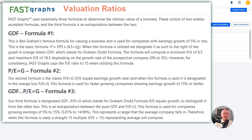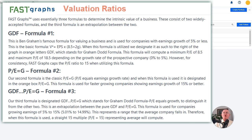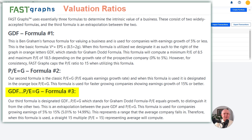We're going to start by talking about the formulas that we use. If a company's growth rate is 5% or less, FastGraphs will utilize what we call the Graham-Dodd formula, designated by GDF. For high-growth companies growing faster than 15% a year, we incorporate the formula Peter Lynch made famous: PE ratio equal to growth rate, or PEG. The third formula is an extrapolation between the two, adjusted for companies that grow between 5% and 15%, which is the majority of companies.